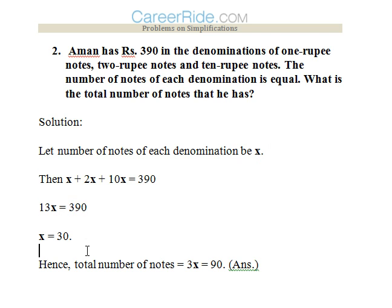Solving 13x = 390 gives x = 30. Since there are 3 denominations and 30 notes of each, the total number of notes Amon has is 3 × 30 = 90.